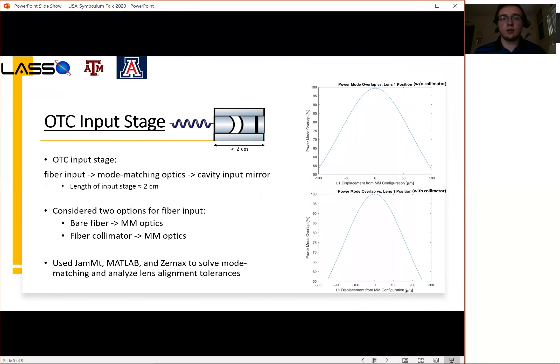Beyond this, we wanted to develop the OTC input stage. The input stage consists of a fiber input going into a set of mode matching optics and finally the cavity input mirror. The idea that we wanted to go for was to have a sort of monolithic piece for the input stage that we could mount onto one side of the telescope, while having the back cavity mirror mounted onto the other side of the telescope.